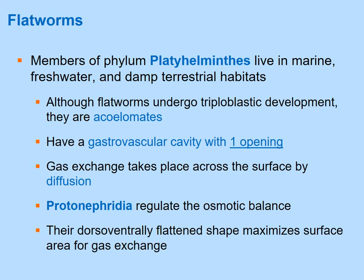Flatworms — phylum Platyhelminthes — live in water (fresh or marine) or in damp terrestrial habitats. They undergo triploblastic development but are acoelomate, meaning they lack a body cavity. They are one example that retains a gastrovascular cavity with only one opening serving as both mouth and anus.